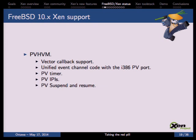On FreeBSD 10 we added PVHVM support, which required adding support for the vector callback. We unified the event channel code with the PV port, reducing code duplication inside FreeBSD. We also implemented PV timers and PV APICs to reduce emulation overhead, and we had to implement the PV suspend and resume protocol to re-enable PV timers and PV APICs.